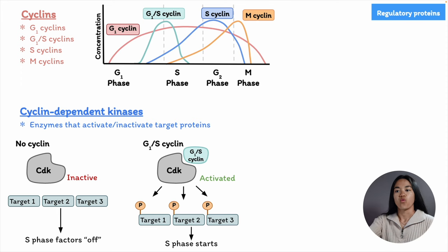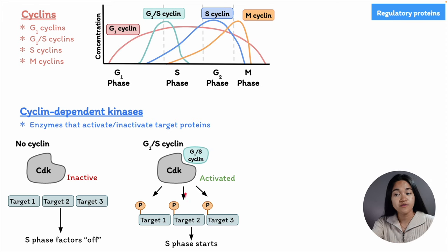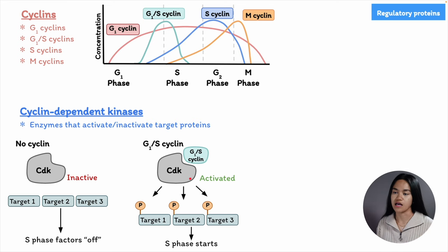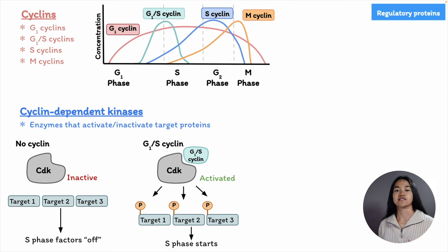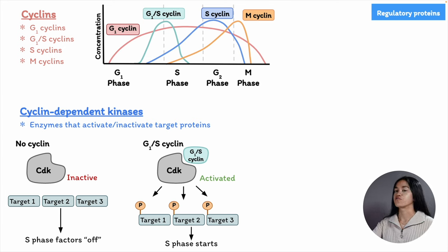These kinases are called cyclin-dependent kinases, or CDKs — they depend on cyclin to become enzymatically active. CDK by itself is inactive and cannot act on target proteins, but the binding of a cyclin activates it into a functional enzyme. When a cyclin attaches to a CDK, it activates the CDK and directs it to a specific set of target proteins, forming a cyclin-CDK complex. These cyclin-CDK complexes, if activated, aid in triggering a variety of cell cycle events such as entry into S phase or M phase.